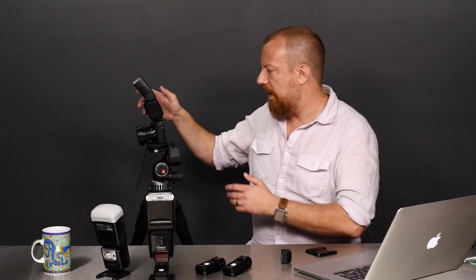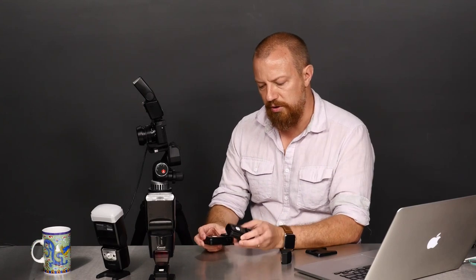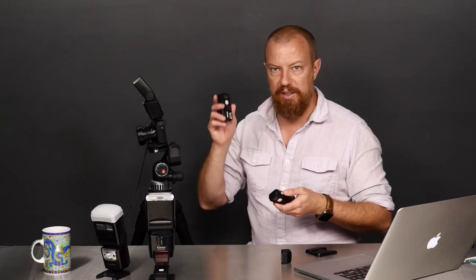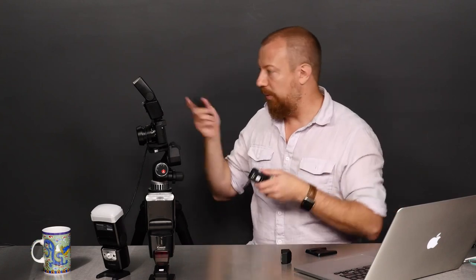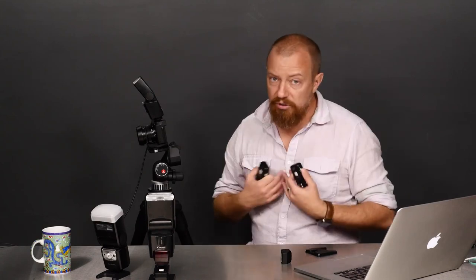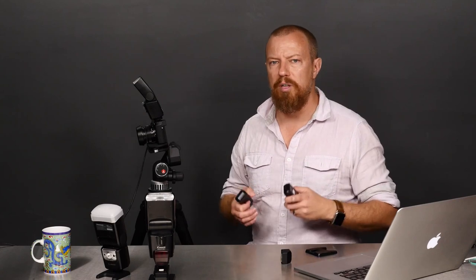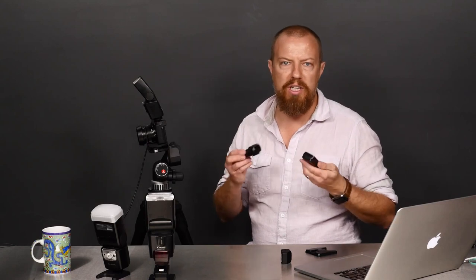So there are other options. Options that I've used, I've been using these for years, are these Photix triggers. These are what I call dumb triggers. They don't have any TTL, there's no fancy anything. It basically says fire from the camera, it fires and the receiver receives the fire signal and that's it. So everything has to be manual, which personally when I'm working with strobes I almost always like to shoot in full manual.